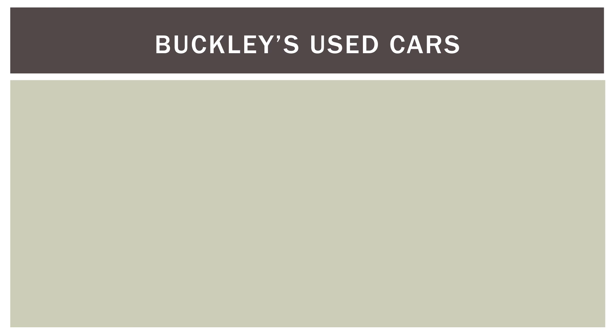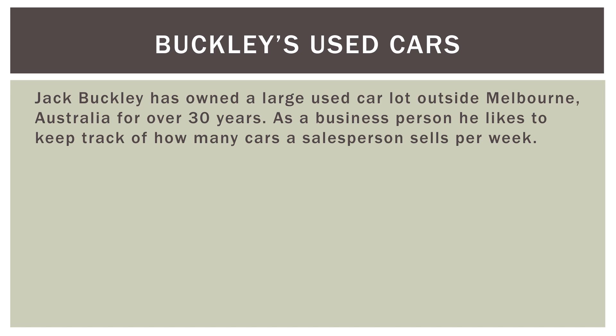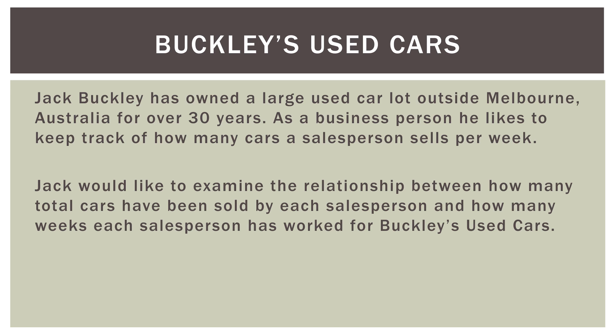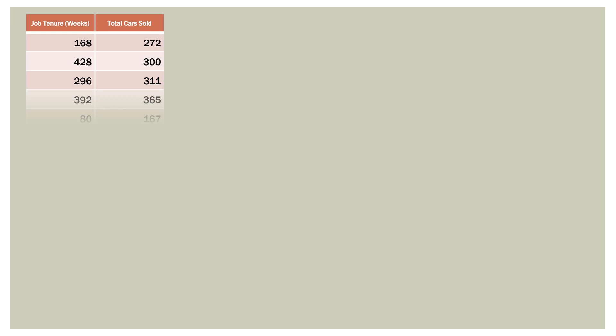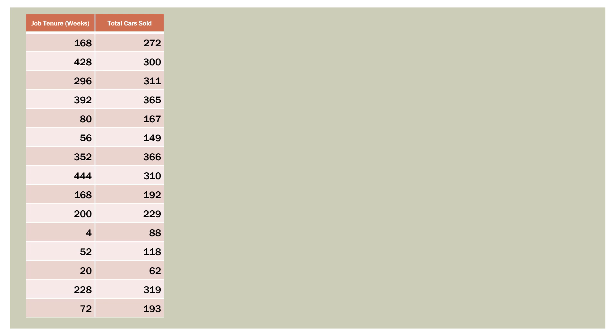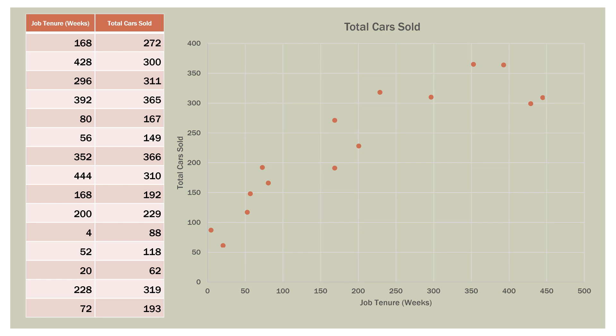Here's the example we've been using. Jack Buckley has owned a large used car lot outside Melbourne, Australia for over 30 years. As a business person, he likes to keep track of how many cars a salesperson sells per week. Jack would like to examine the relationship between how many total cars have been sold by each salesperson — whether they work there still or not — and how many weeks each salesperson has worked for Buckley's Used Cars. Our goal is to produce a model that minimizes error but will also be good for new data.